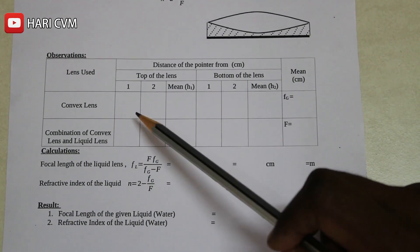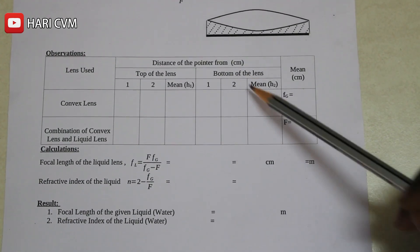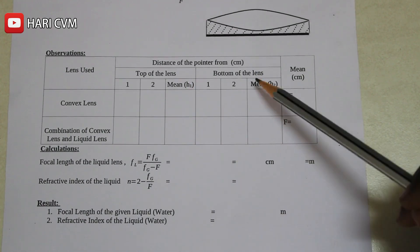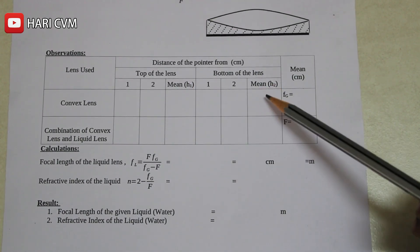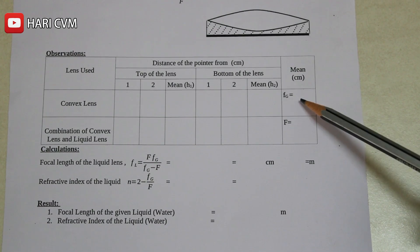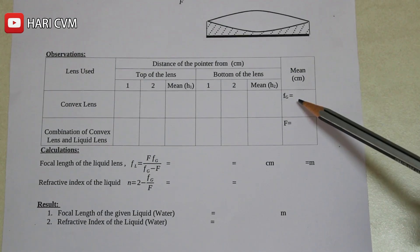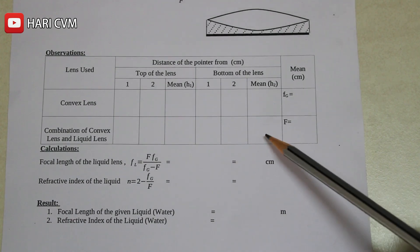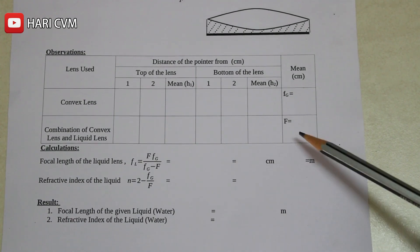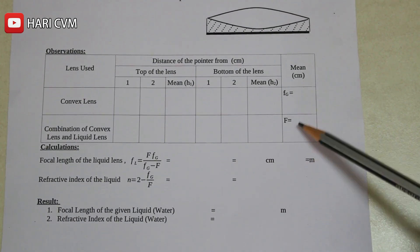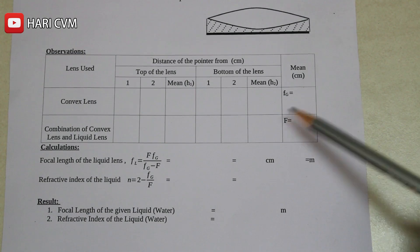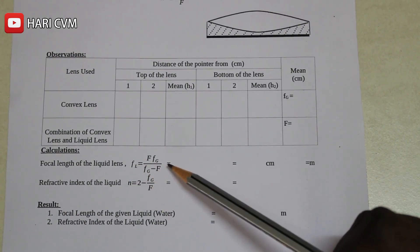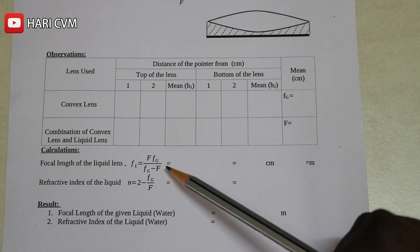The convex lens top reading and bottom reading — that is lens top reading and mirror top reading — gives the mean value of the focal length of the glass. The second measurement gives the focal length of the liquid lens.